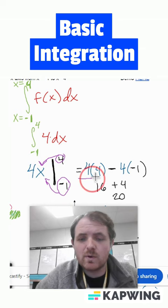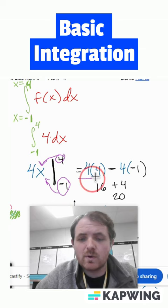Giving you 4 times 4 minus 4 times negative 1, giving you a final answer of 20.